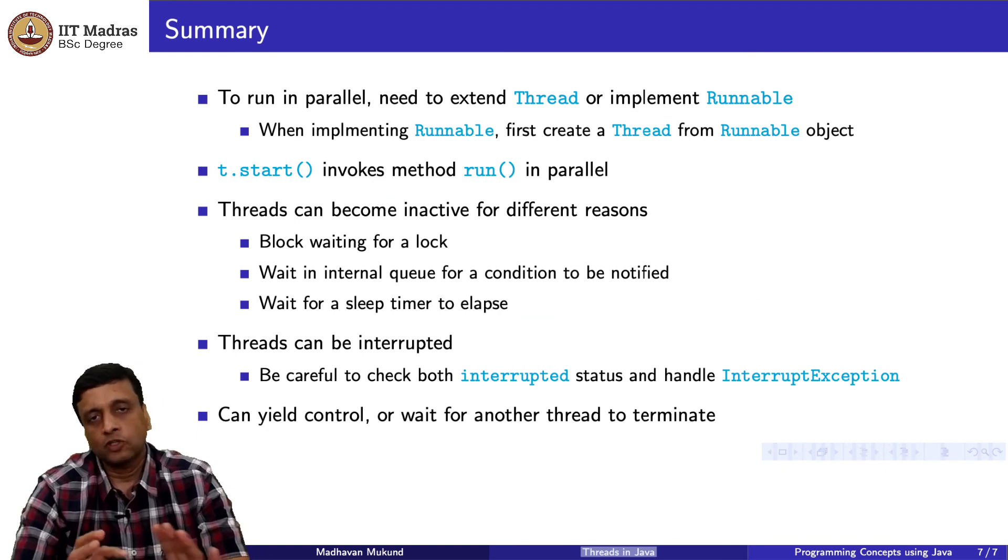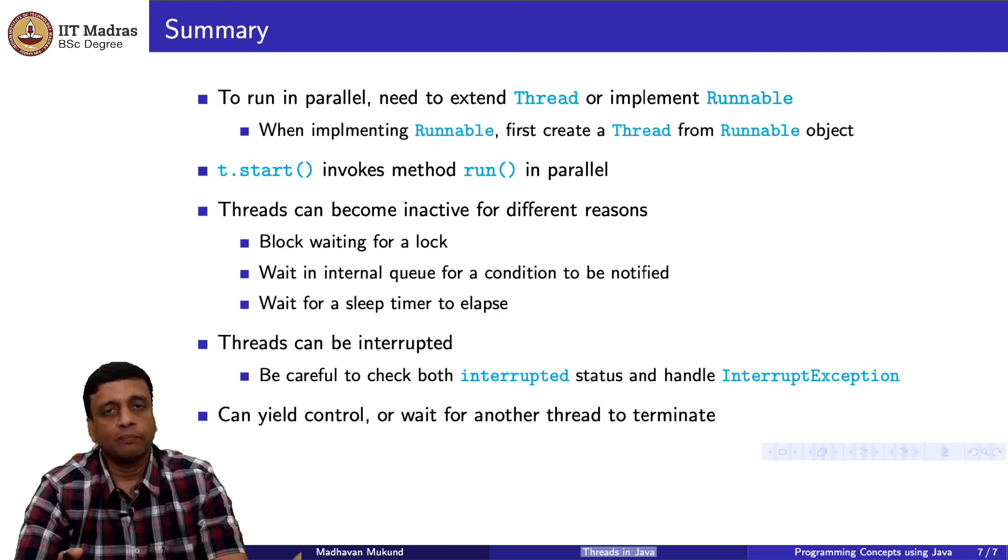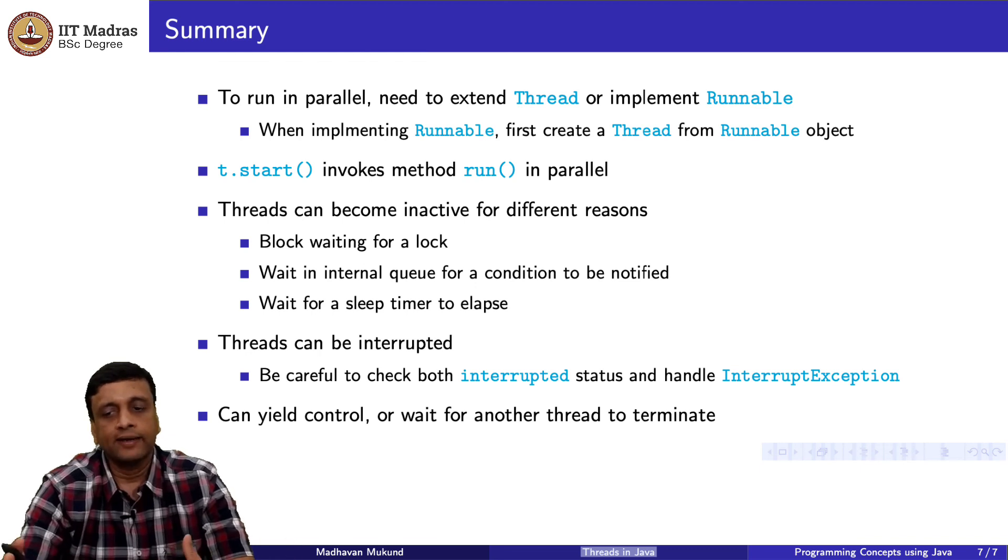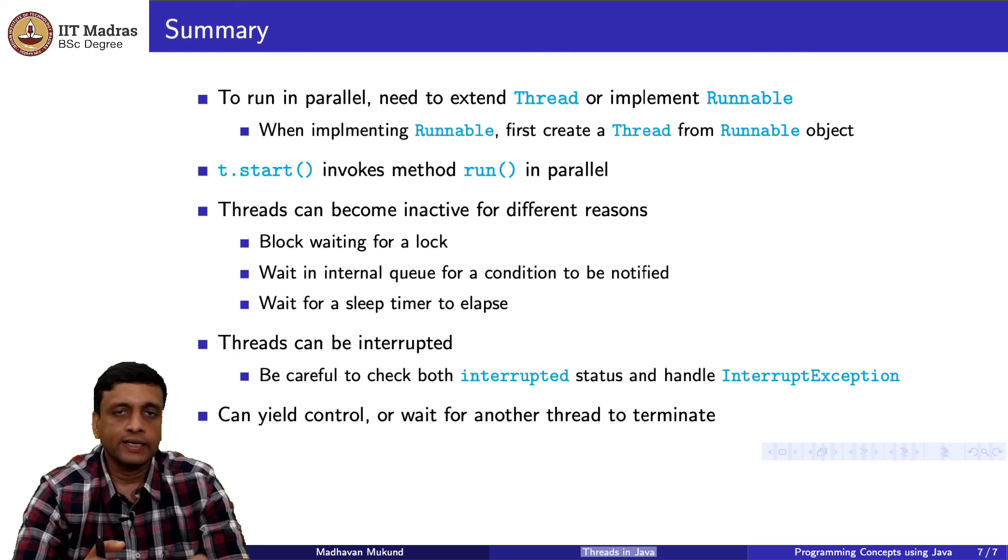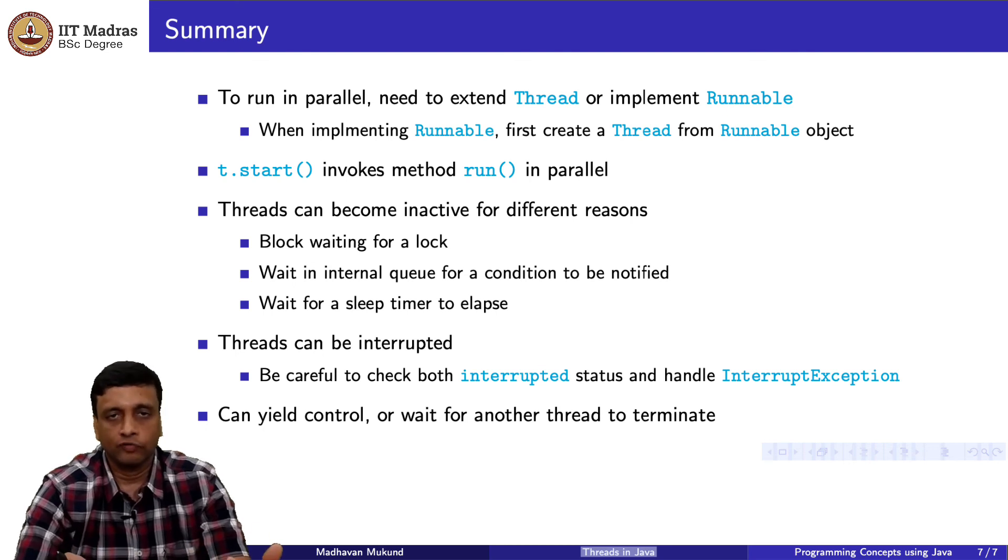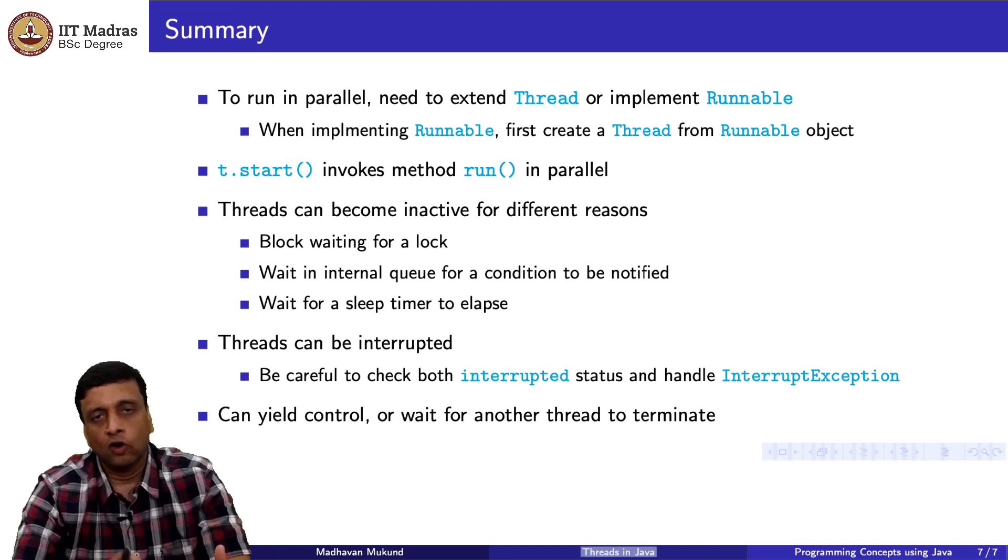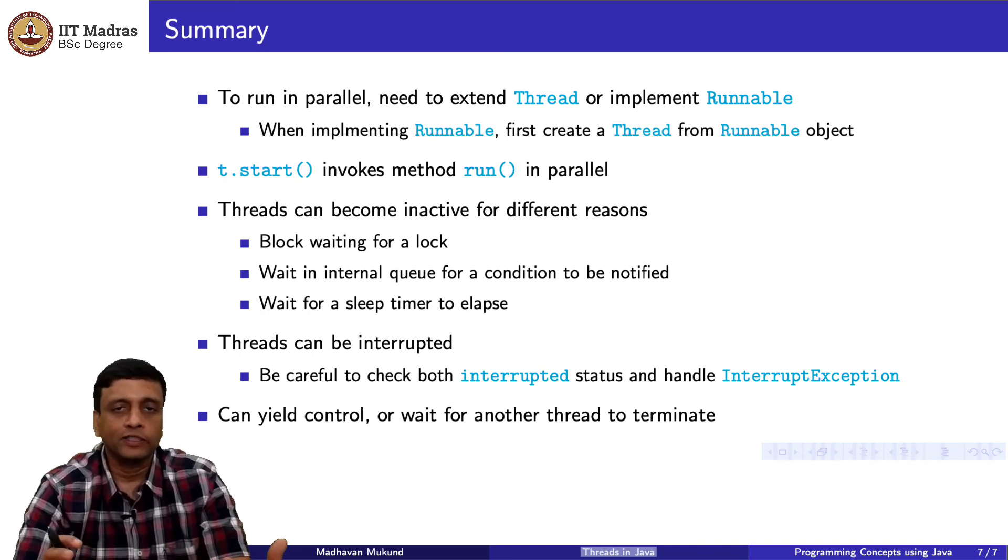To summarize as we saw earlier, if you want to run something in parallel in Java, you must extend Thread or implement Runnable. And if you implement Runnable, you have to be careful to first take the Runnable object and make a thread out of it. Otherwise, you cannot do the start. And start invokes run in parallel. You do not directly call the run function. You have to implement the run function, override it. But what you do to create run in parallel is to actually say start.